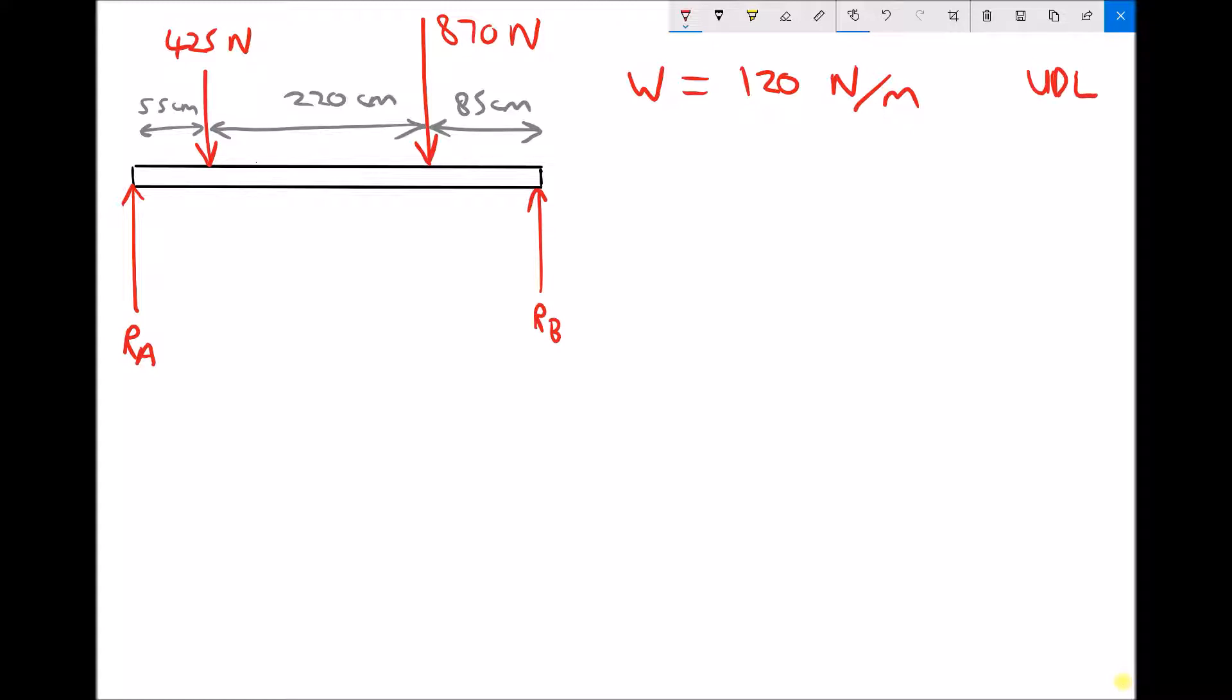A uniform distributed load is a load that's distributed across a length. We're going to use the example of the weight of the beam to begin with. So what we have here is the weight of the beam is 120 newtons per meter. That means that every one meter section of this beam weighs 120 newtons.